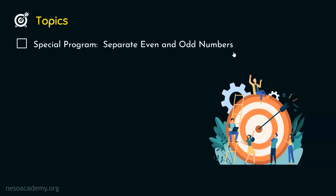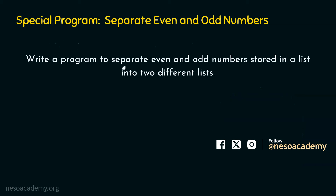In this lecture, we will write a program to separate even and odd numbers. But before going ahead with the program, we first need to understand the problem statement. The problem statement is: write a program to separate even and odd numbers stored in a list into two different lists. Our job is to extract even and odd numbers from that list and store them into two different lists — an even numbers list and an odd numbers list.